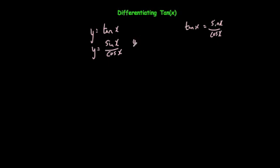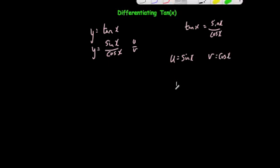So that's u over v. That means u is equal to sin x and v is equal to cos x. The quotient rule is: dy/dx is equal to v du/dx minus u dv/dx, all over v squared.